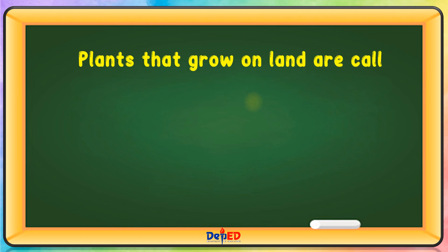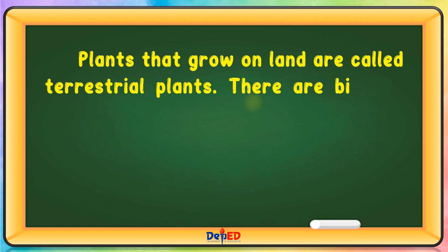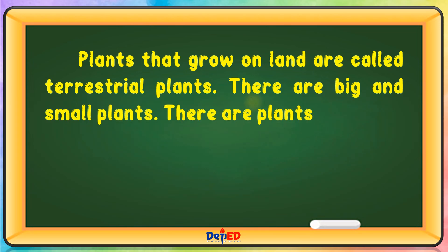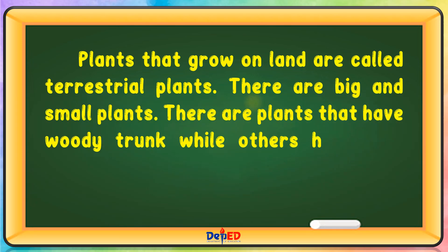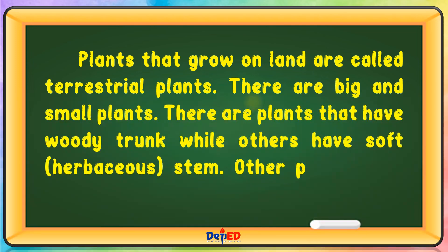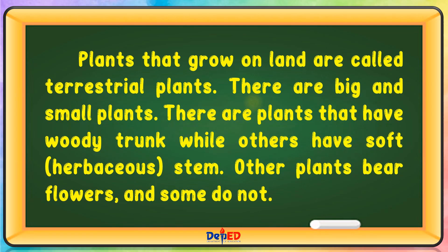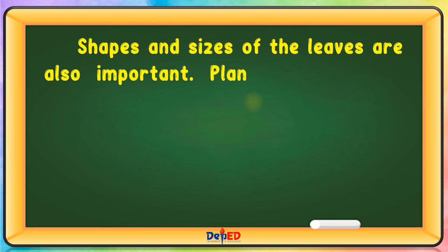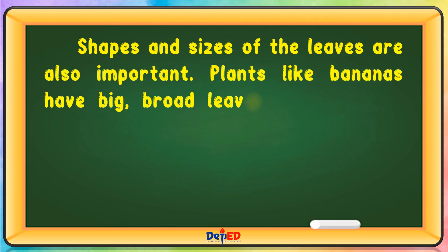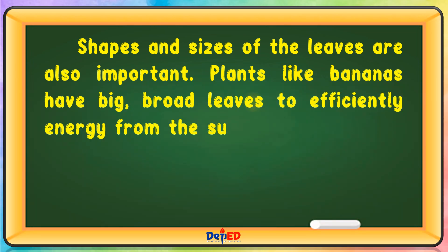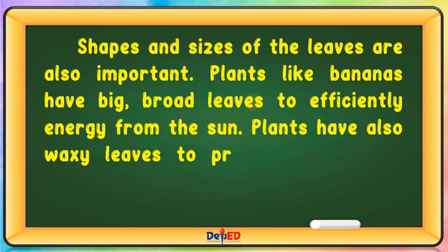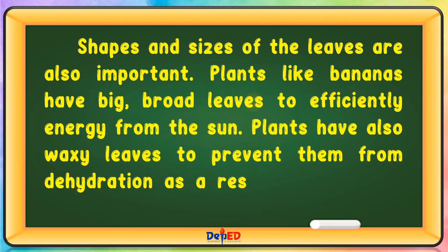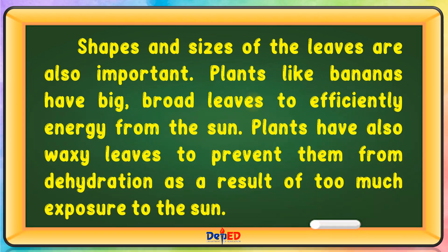The leaves provide food and air. They turn light energy into food. Plants that grow on land are called terrestrial plants. There are big and small plants. There are plants that have woody trunks while others have soft stems. Other plants bear flowers and some do not. Shapes and sizes of the leaves are also important. Plants like bananas have big, broad leaves to efficiently capture energy from the sun. Plants also have waxy leaves to prevent them from dehydration as a result of too much exposure to the sun.